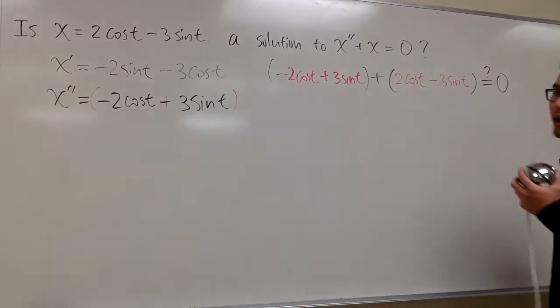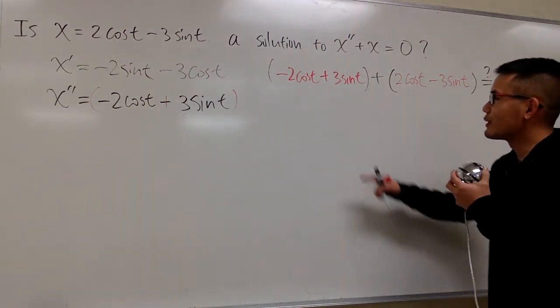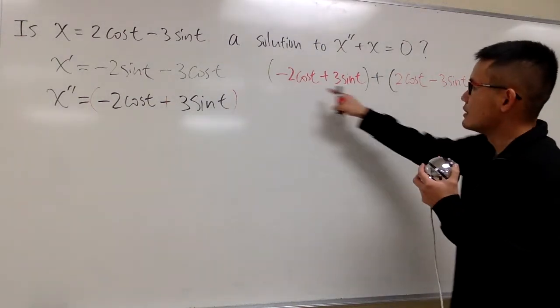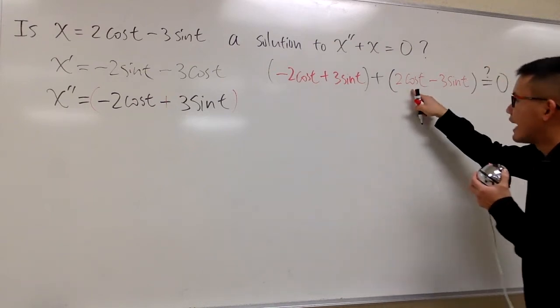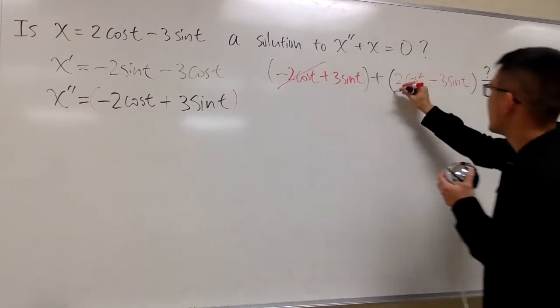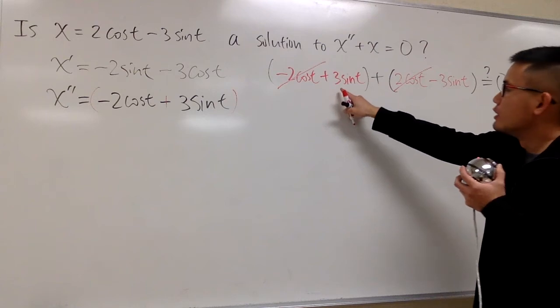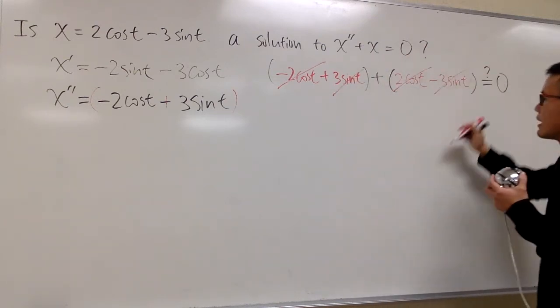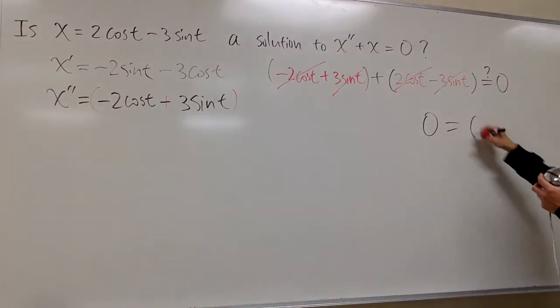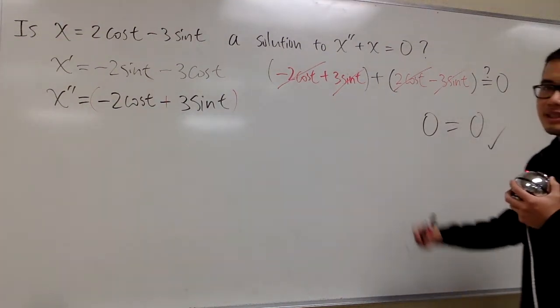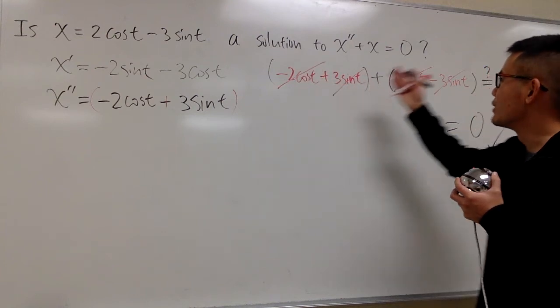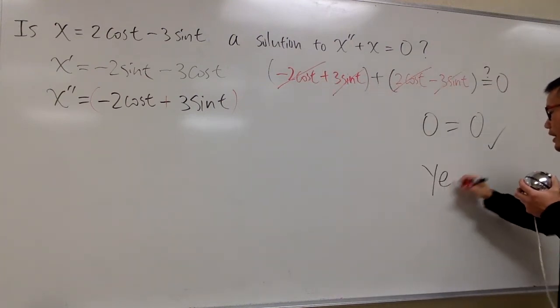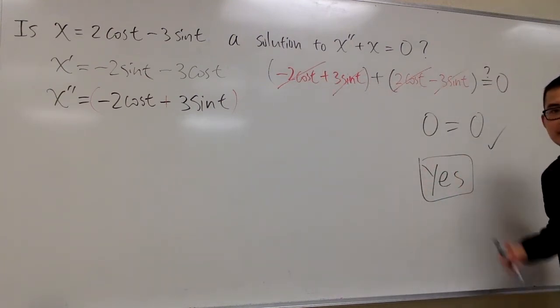Do we end up with 0? Yes, I think so. Because we are just adding, you can see, this and that, they cancel each other out. Likewise, 3 sine t and negative 3 sine t, they also cancel each other out. So, you end up with 0, which is of course equal to 0, and that means, yes, that is a solution to this differential equation, and that's it.